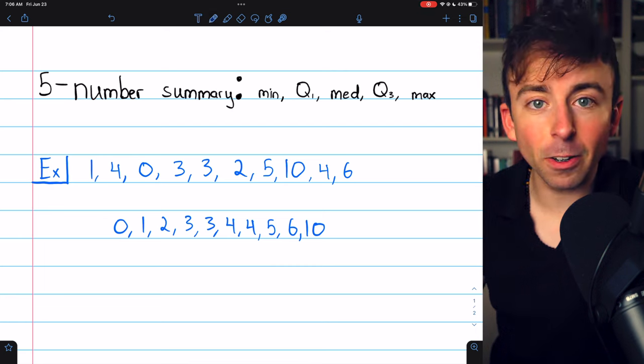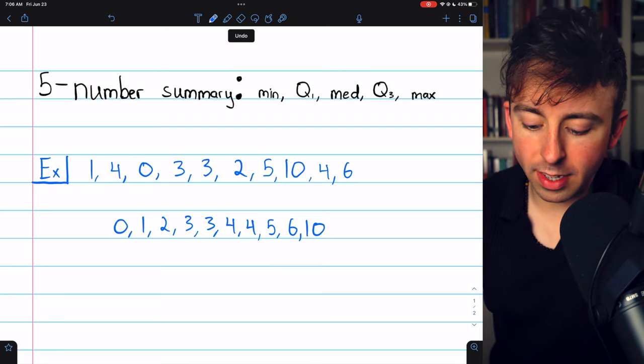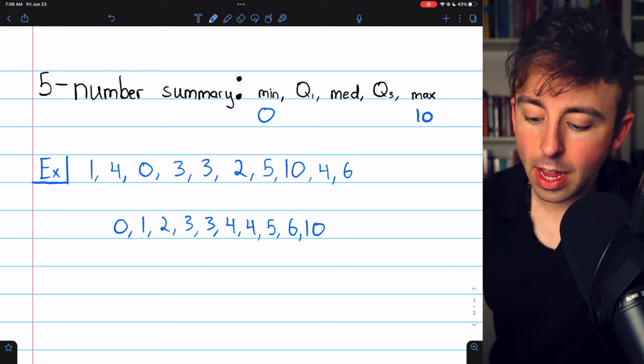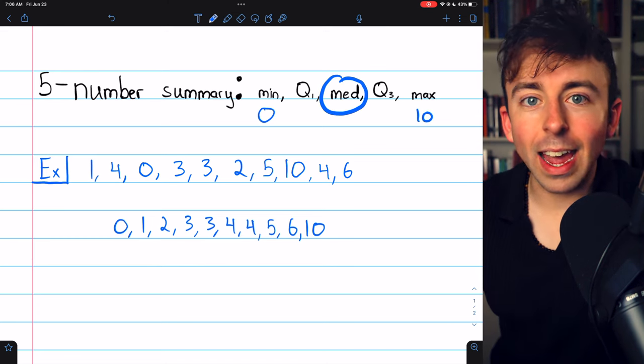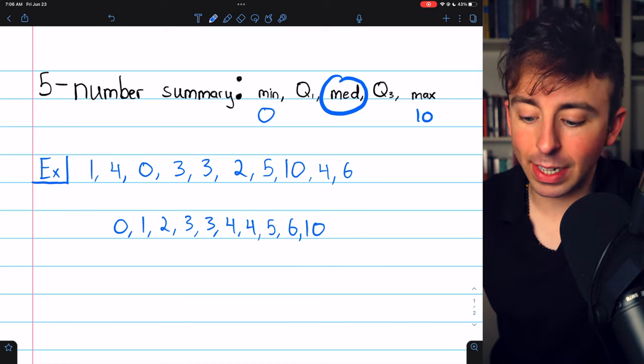And that gets us here. We see the minimum is 0, the maximum is 10. The median is the number in the middle, or in this case, because we have an even data set...